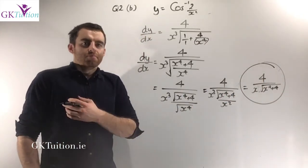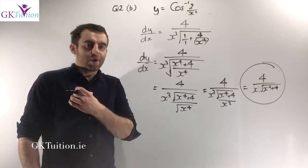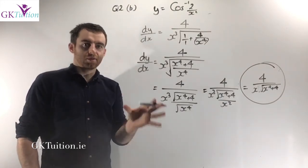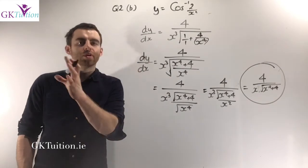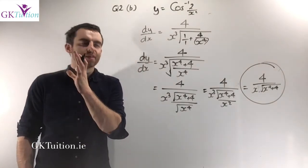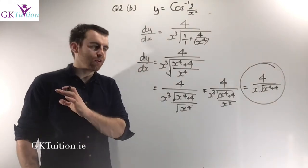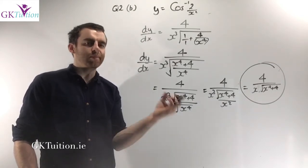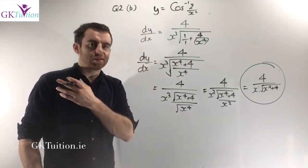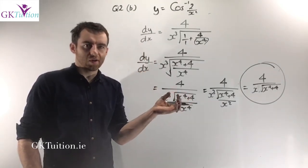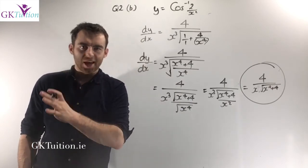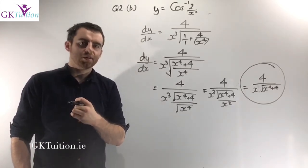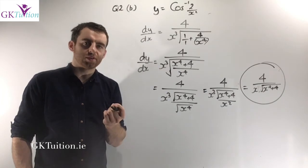The only reason I'm showing you that second method is to make the point: don't do it that way. The first method I showed you is the way to go because it follows the same general template every single time, whereas this second method is different every single time. So let's move on to the last part of the question.